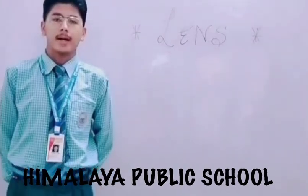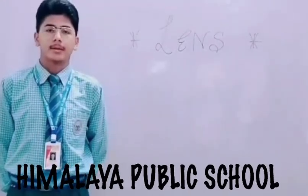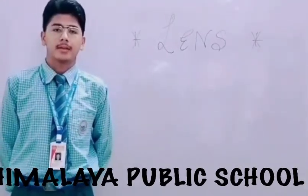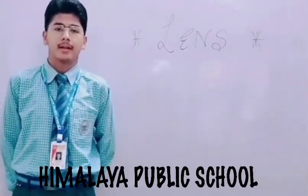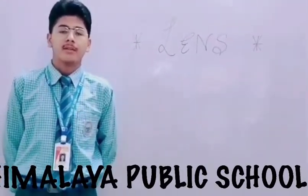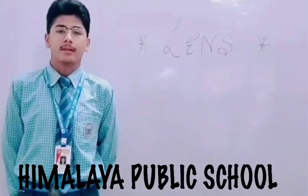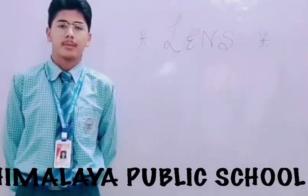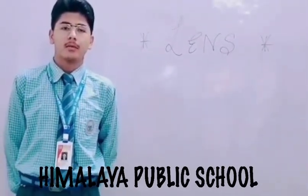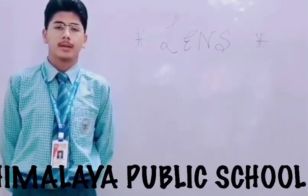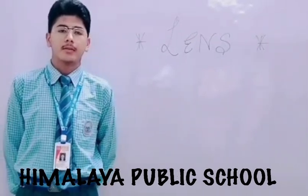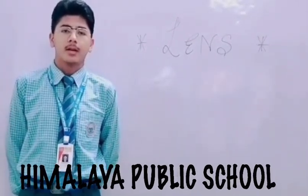Good morning to all of you. My name is Varis Bissing and today my topic is on lens and its ray diagram. Firstly we talk about what is lens. Lens is a piece of transparent material with two reflecting surfaces such that one is curved.